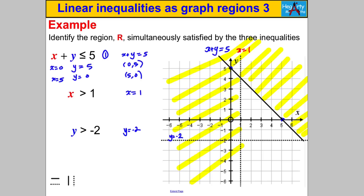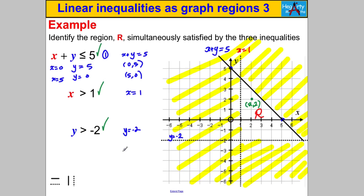For x > 1, we don't want x ≤ 1, so shade everything to the left of the line x = 1. For y > -2, we don't want y < -2, so shade below y = -2. Now the unshaded region left over is clearly R. Let's test the point (2, 2): is 2 + 2 ≤ 5? Yes. Is 2 > 1? Yes. Is 2 > -2? Yes. It satisfies all three, confirming we've labeled the correct region R.